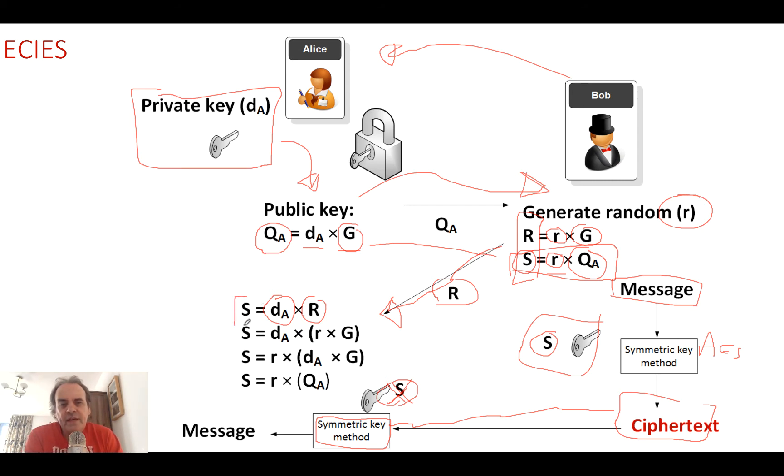With the R value, Alice can recompute the value of S by taking her private key and multiplying it by R. We can prove this because R is equal to r times G, so that's equal to r times dA times G, and that's the same as the value that Bob used for the encryption key. Alice will now know what the S value is and use that as the decryption key for the ciphertext, and she should be able to get the message back again.